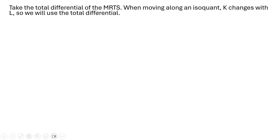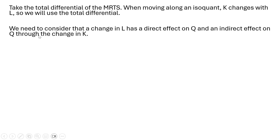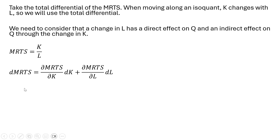We're going to take the total differential of the marginal rate of technical substitution. Keep in mind, when moving along an isoquant, K changes with L, so we will use the total differential. We need to consider that a change in L has a direct effect on output Q and an indirect effect on Q through the change in K. So here's our marginal rate of technical substitution, and the total differential will look something like this.